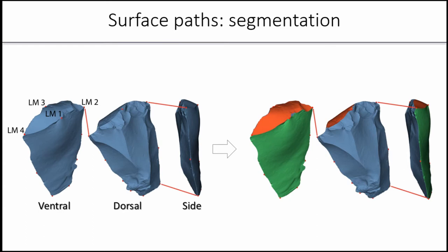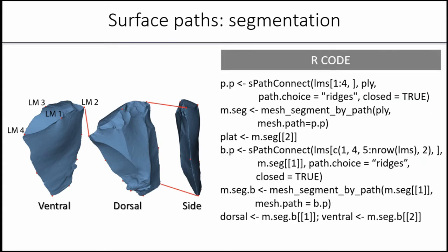What is required in order to do this? This is the R code that is required. You use this SPATH Connect function to request that these landmarks be connected following ridges along the platform. This will output a list of vertex IDs on the surface of this mesh that must be traversed. Then you have this function, mesh segment by path, which allows you to actually cut the mesh along that path. That will output isolated surfaces in order of their size. Because the platform component is much smaller than the body of the flake, the platform will be the second element in this list, and the body will be the first element.